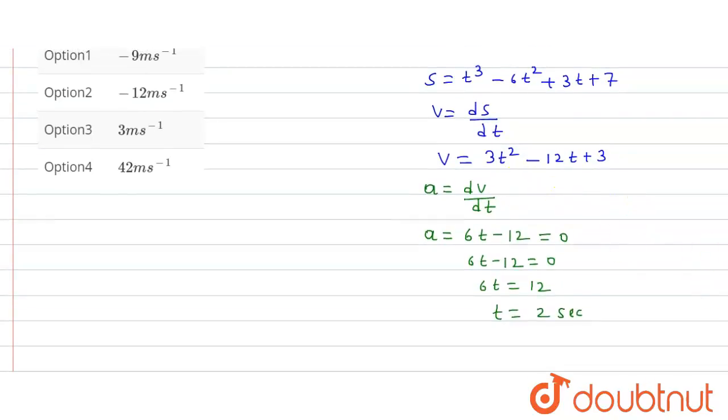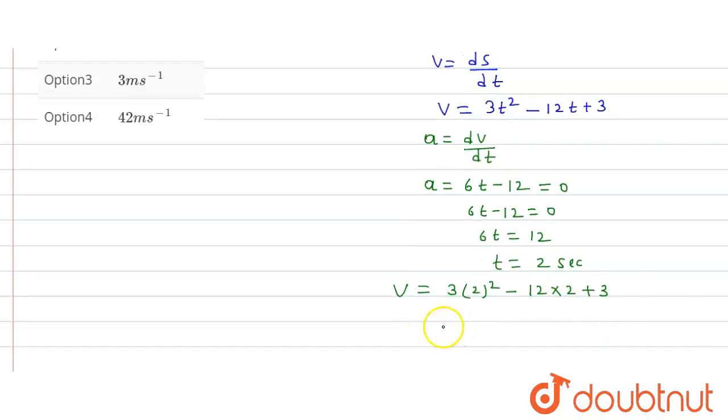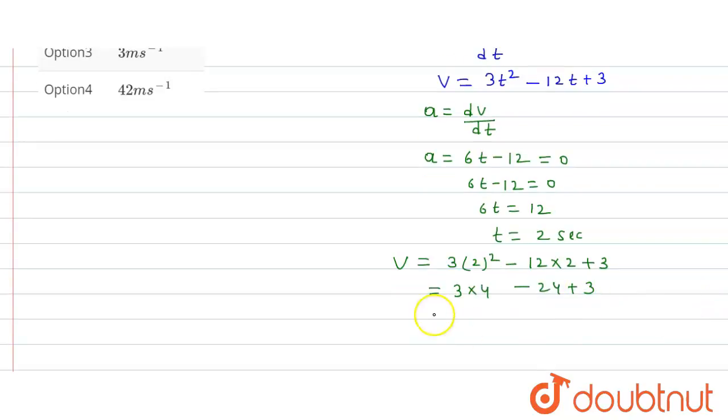Put this 2 seconds in the velocity equation. So velocity V will be 3 into t square, means 2 square, minus 12 into 2 plus 3.